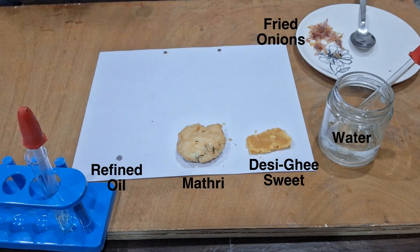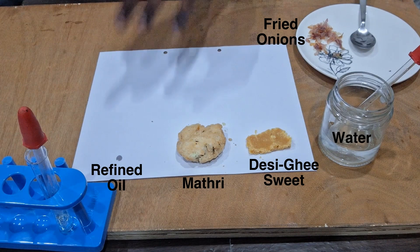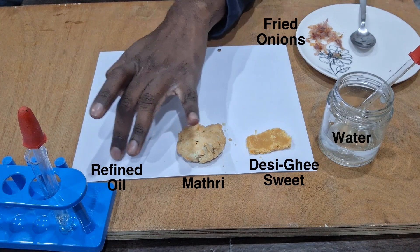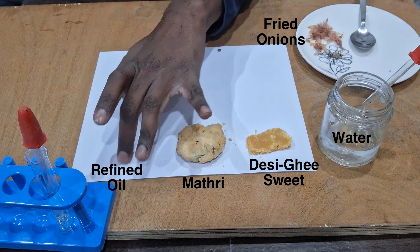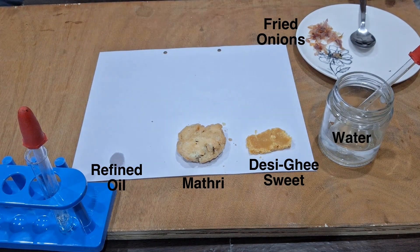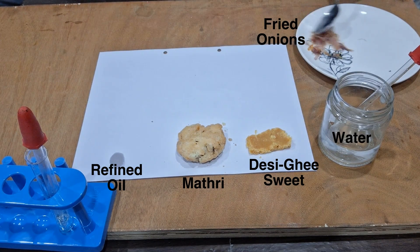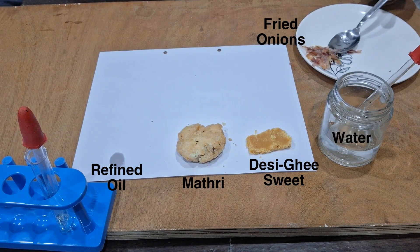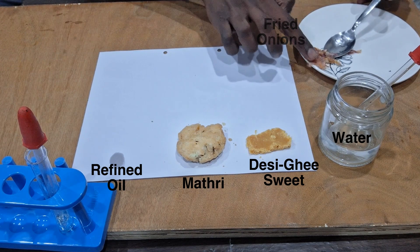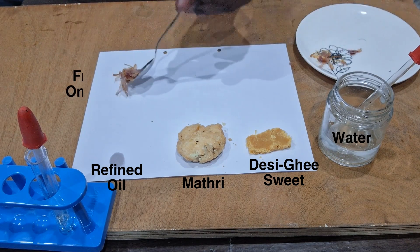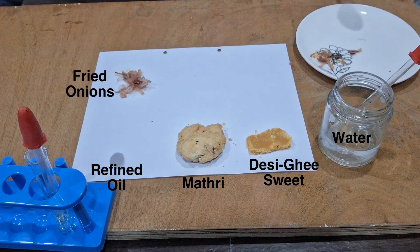I'll spread this refined oil using my finger on the paper so that it's not just concentrated in one place, then let it dry. It's very obvious that there is a stain, and that stain shows the presence of fat. Now let's pick up some fried onions — these are fried in cooking oil, so it's kind of obvious we're going to get a stain.